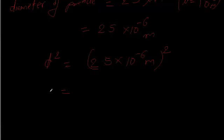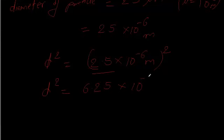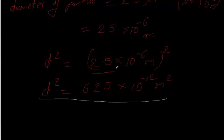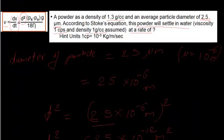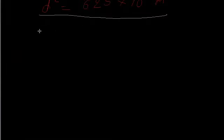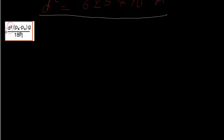So d squared equals (2.5 × 10⁻⁶)² which gives us 6.25 into 10 to the power of minus 12 meter squared. We already have the d squared value.